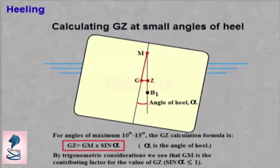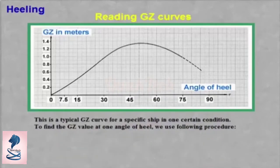How to calculate GZ at small angles of heel. This is a typical GZ curve for a specific ship in one certain condition. To find the GZ value at one angle of heel, we use the following procedure.